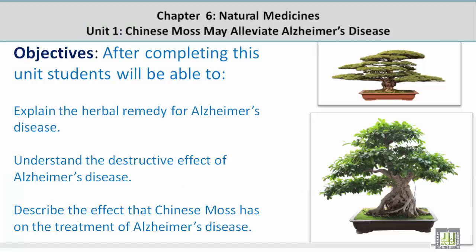Objectives. After completing this unit, students will be able to explain the herbal remedy for Alzheimer's disease, understand the destructive effect of Alzheimer's disease, and describe the effect that Chinese Moss has on the treatment of Alzheimer's disease.